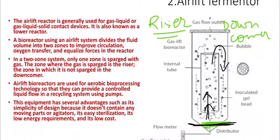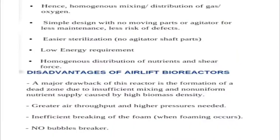The zone where there is no sparging is called the downcomer. Airlift bioreactors are used for aerobic bioprocessing technologies, providing controlled liquid flow in a recycling system using pumps. Advantages include simplicity of design because it does not contain any moving parts or agitators, easy sterilization, low energy requirements, and low cost.